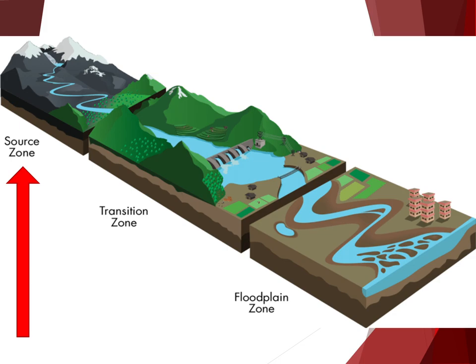Source zones are the headwaters of a river, and these streams are fed from springs and mountain lakes. These streams typically have a rocky substrate, are clear and cold, and flow rapidly. As a result, they are commonly rich in oxygen but low in nutrients.